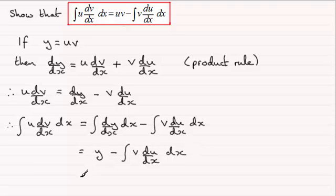But here we've got y, and what is y? Well, we've seen that y equals uv, so we've got uv minus the integral of v times du by dx, and all of that is integrated with respect to x. And there you go, integration by parts formula.